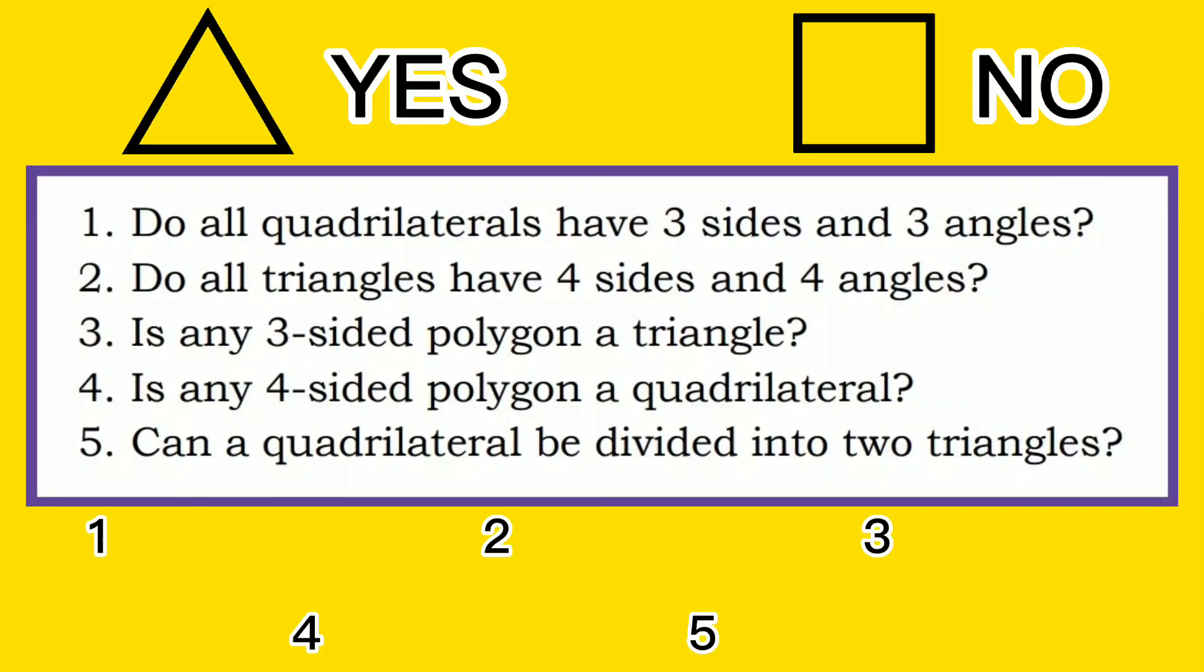Let's now have an activity. Draw a triangle if your answer is yes and a square if it is no. Write the correct answer on a sheet of paper. Number one. Do all quadrilaterals have three sides and three angles? No. Do all triangles have four sides and four angles? No.